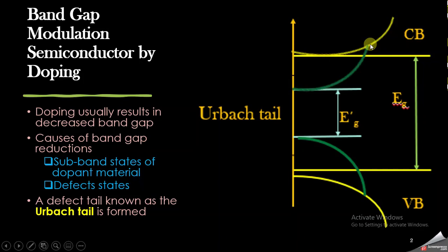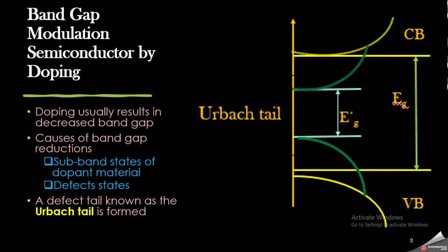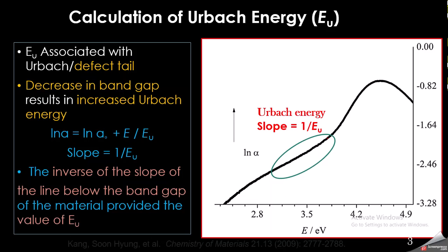These tail-like structures are called Urbach tails, created because of the defects in the material caused by doping. The energy related to this Urbach tail is called the Urbach energy, and it tells us about the defects present in the material.